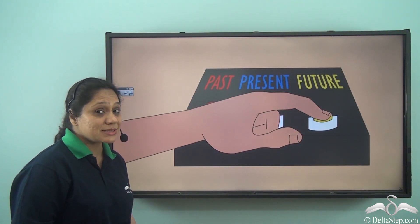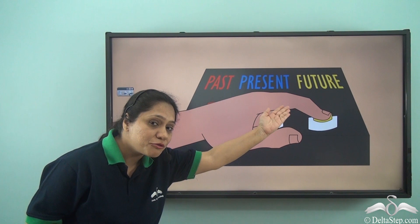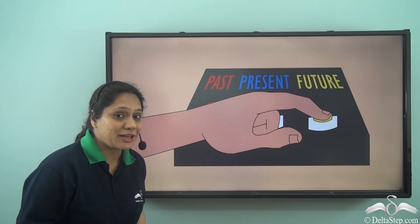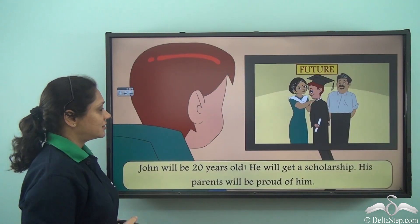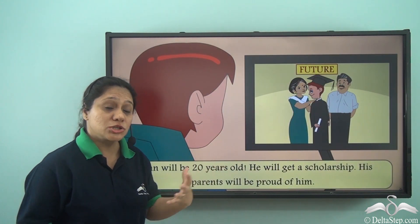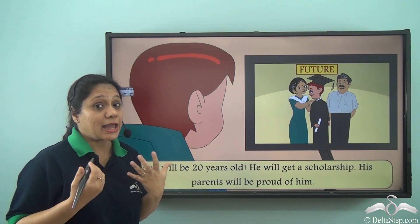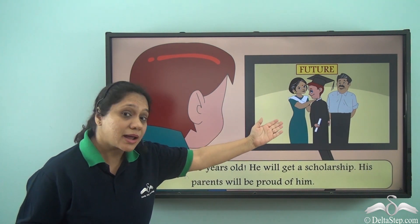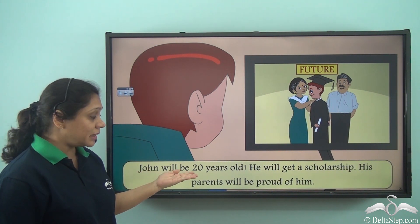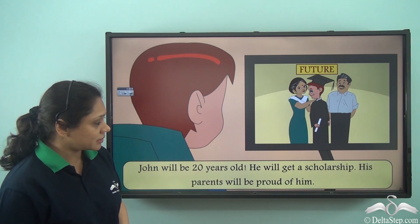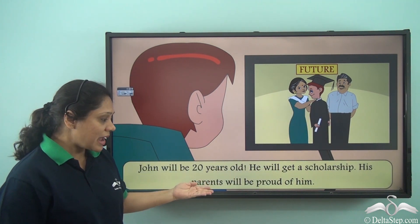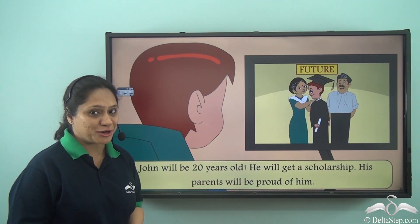So he presses the button which has 'future' written next to it. And what does he see on the screen? He sees a photograph of something which looks like him. His parents are a little old here. He sees John will be 20 years old. He will get a scholarship. His parents will be proud of him.